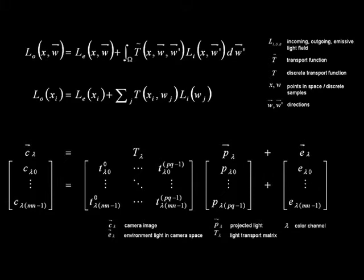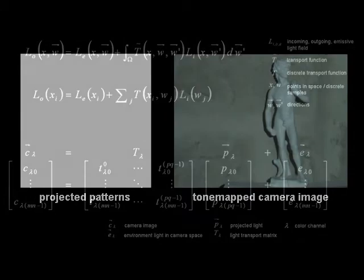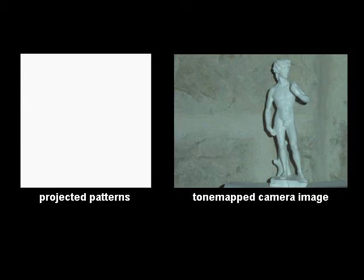Forward light transport has recently been used for BRDF and BSSRDF acquisition, relighting, and environment matting applications. An efficient hierarchical light transport acquisition scheme was described by Sen et al. in their dual photography paper.